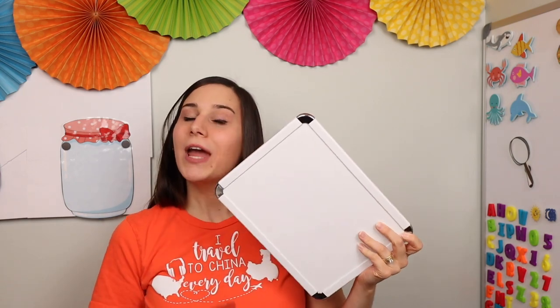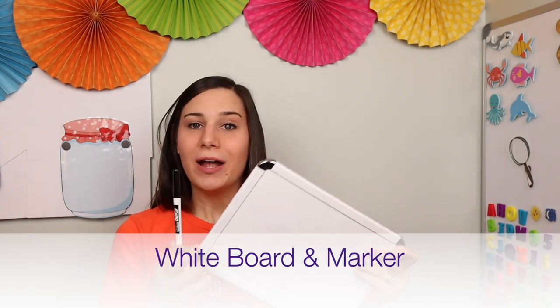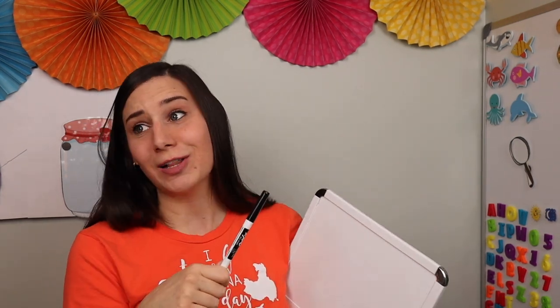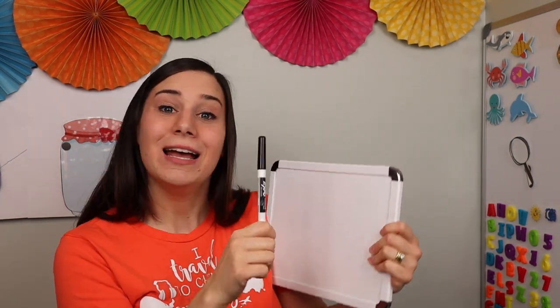The next thing you will need is a whiteboard and a marker. If you don't have one you can use paper and pen, but when you become a VIP Kid teacher a whiteboard and marker are going to be some of your best friends for most of your classes. The next thing you'll need is props — the prop I recommend you have is a ball.